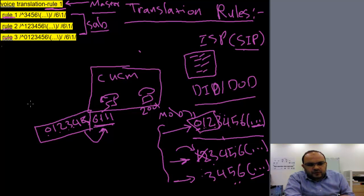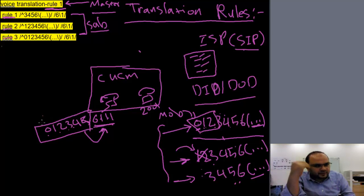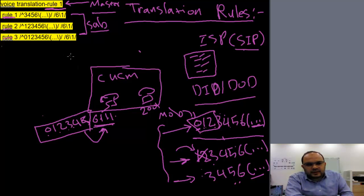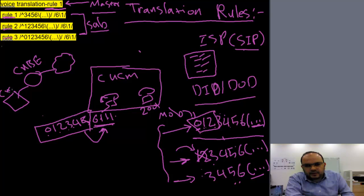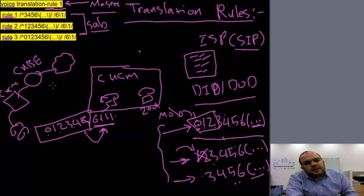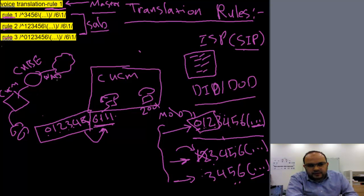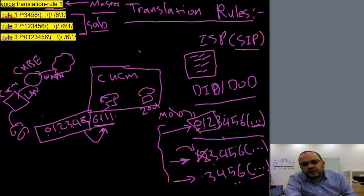If anyone calls from outside my network — from the service provider or PSTN — he will dial the full DID/DOD number. It will go to the SIP cloud, then forward to my CUBE, then to my CUCM. I will also explain something called WAN dial peer and LAN dial peer later — but right now I just want to explain the call flow scenario.